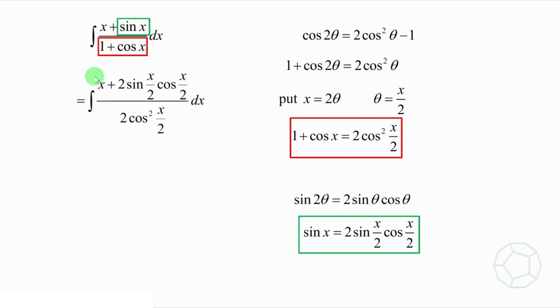It is equal to integrate x plus 2 sin x over 2 cos x over 2, all over 2 cos² x over 2 dx. There is only one term in the denominator, so we can separate the integrand into two fractions, which is integrate x over 2 cos² x over 2, plus sin x over 2 over cos x over 2 dx.